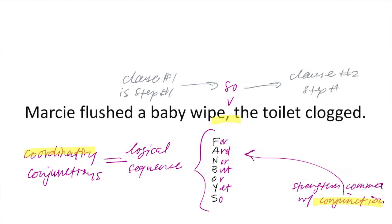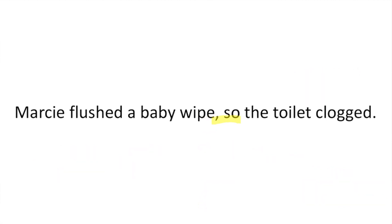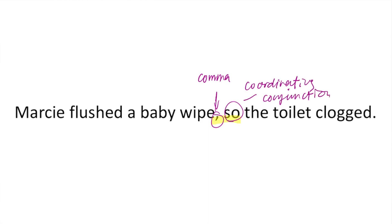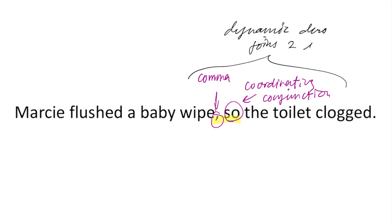Because Marcy flushed the baby wipe, then the toilet obviously clogged. Let's swap in our coordinating conjunction and conjoin it with the comma. Our sentence now reads: Marcy flushed a baby wipe, so the toilet clogged. You'll note that we have a comma and our coordinating conjunction. The comma plus the coordinating conjunction is like a dynamic duo that can join two independent clauses together. So whereas the comma alone handles a dependent and an independent, this dynamic duo joins two independent clauses together.